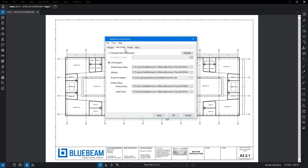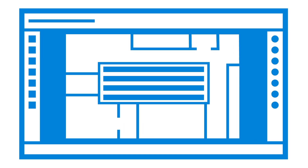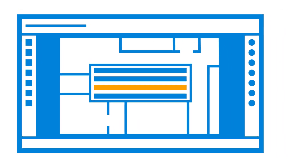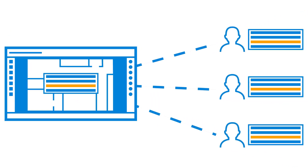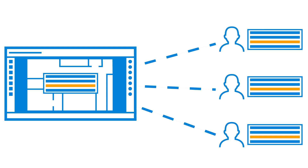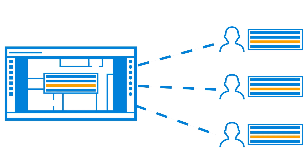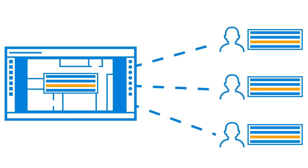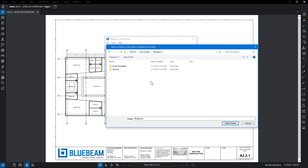Click the Net Config tab. Here, you can configure centralized network settings. This will allow you to make a single change to one network location and then make it immediately available to everyone on that network, bypassing the need to make changes on each individual workstation. Note that by default, settings are not centralized. To centralize all customizable Bluebeam settings, select the Manage Net Configuration option.